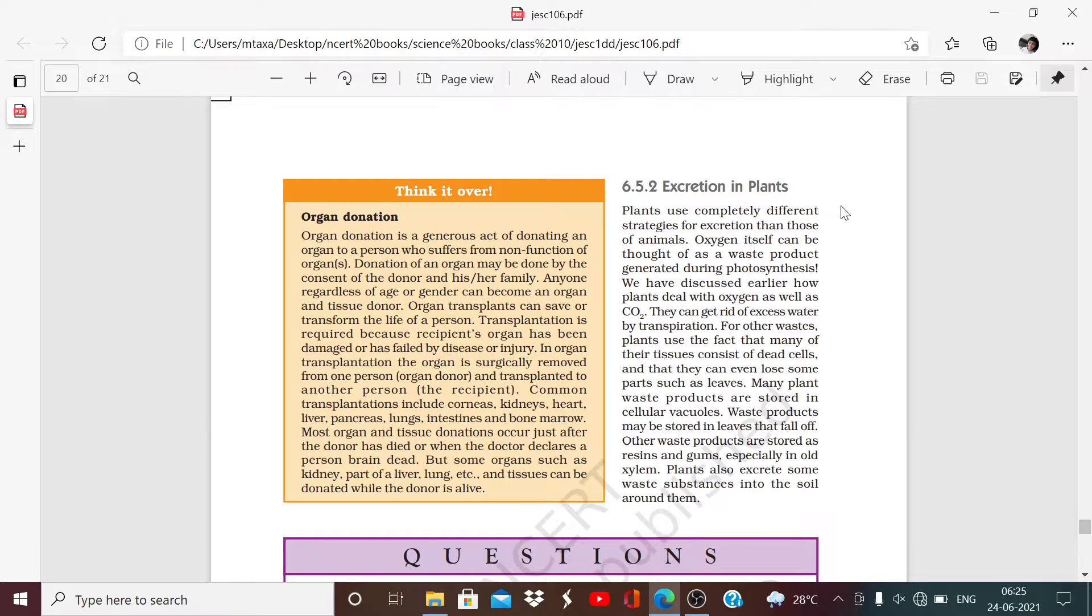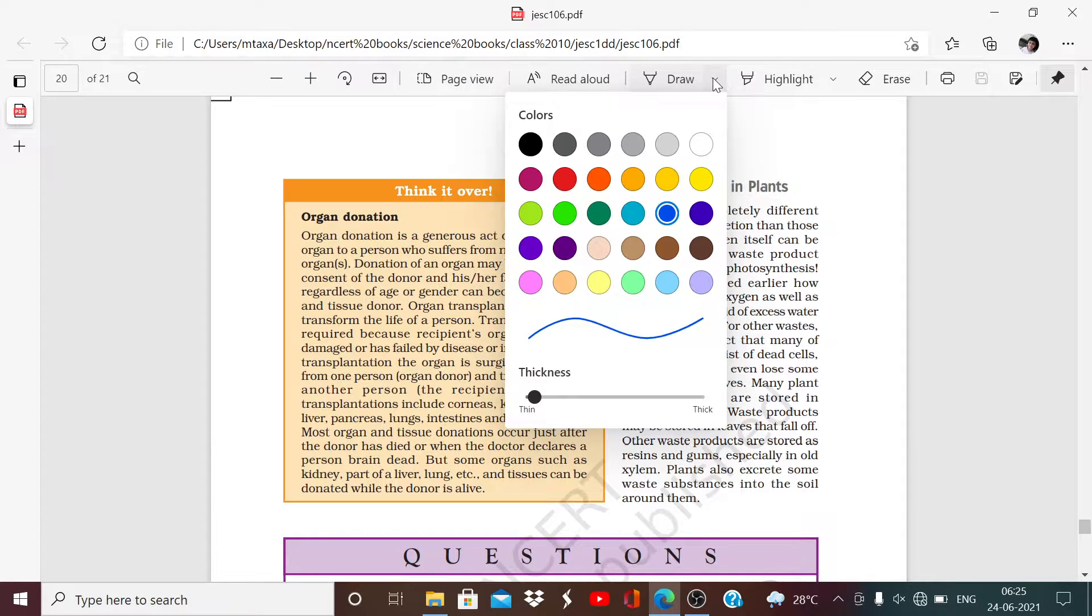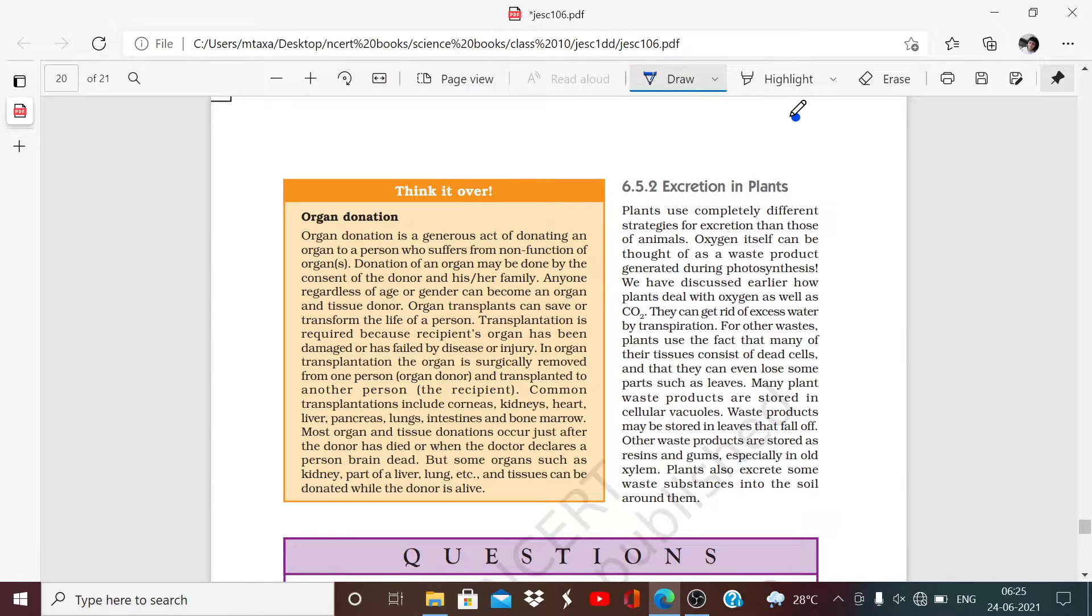They absorb CO2 from the atmosphere through the surface of the guard cells, which we have named stomatal pores. Through these pores CO2 is absorbed. This one is a guard cell and the other one is the stomatal pore through which CO2 is absorbed from the atmosphere.